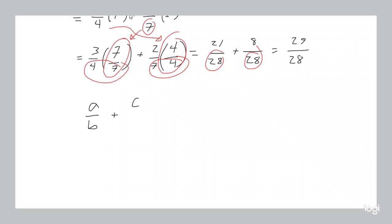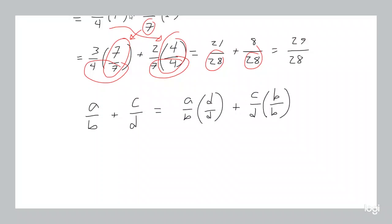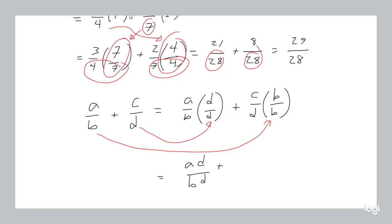General rule: A over B plus C over D. You multiply each fraction by 1, where that 1 is of the form of the opposite denominator divided by itself. The D comes from the opposite denominator and the B here comes from the opposite denominator. As a result you have a common denominator — in our case DB. And this works the exact same way for subtraction as it does for addition.